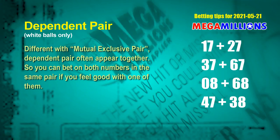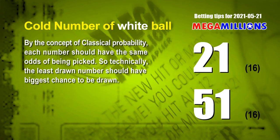Some numbers are dependent — in the same dependent pair you can bet on both, because they often appear together in the winning numbers of a draw. The white ball dependent pairs for the next draw are: 17 and 27, 37 and 67, 08 and 68, and 47 and 38.